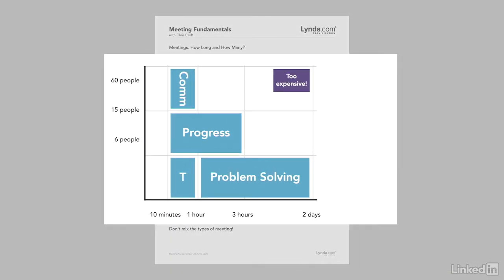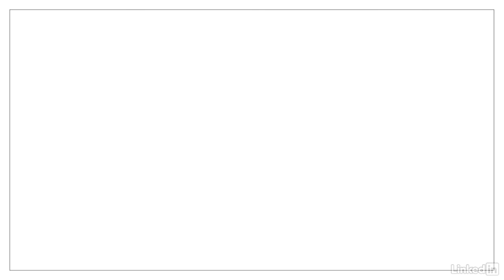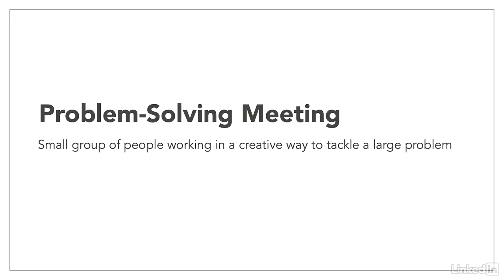Finally, there's the problem solving meeting, which can be long — it could even be two days. This is where you'd go away to a hotel and ponder your five year strategy or whatever. It's a small group of people working in a creative way for as long as it takes. So you've got the one-way communication meeting, the slightly scary progress meeting, the fun weekly team meeting, and the open-ended problem solving meeting. Keep these four types in mind as you watch this course and think about which types apply to you and your workplace.